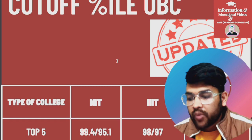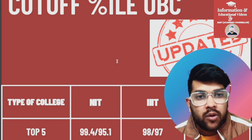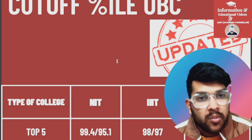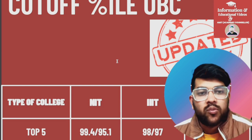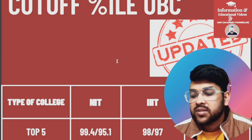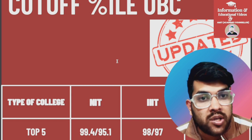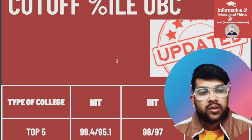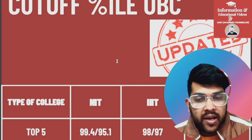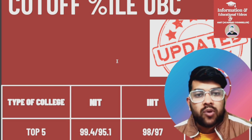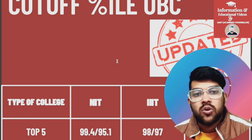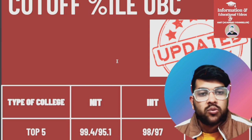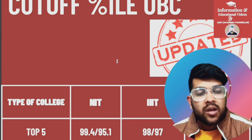Now, for cutoff percentile for OBC category — for top 5 NITs, 99.4 percentile is required to get the CSE branch. Please listen carefully: I am talking about other state quota. If you are from the home state of an NIT — for example, NIT Allahabad, NIT Calicut, NIT Surathkal, NIT Warangal, or NIT Trichy — you may get admission at a lower percentile. For each NIT's home state and other state percentile for all 32 NITs, check my detailed video.